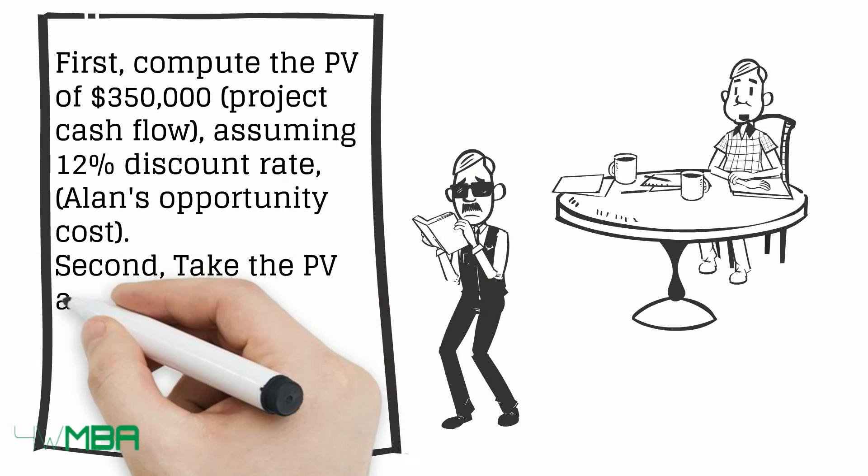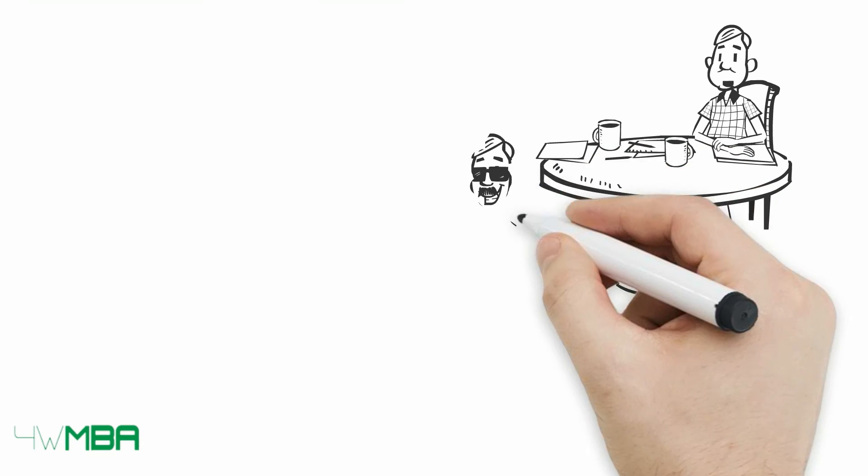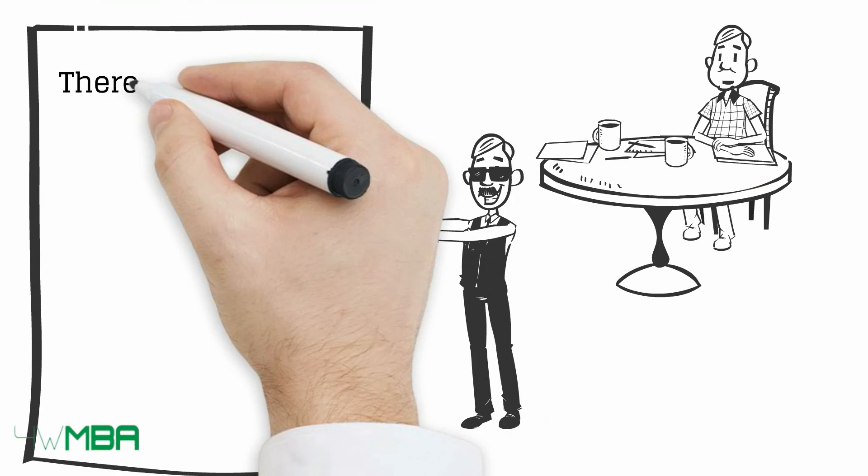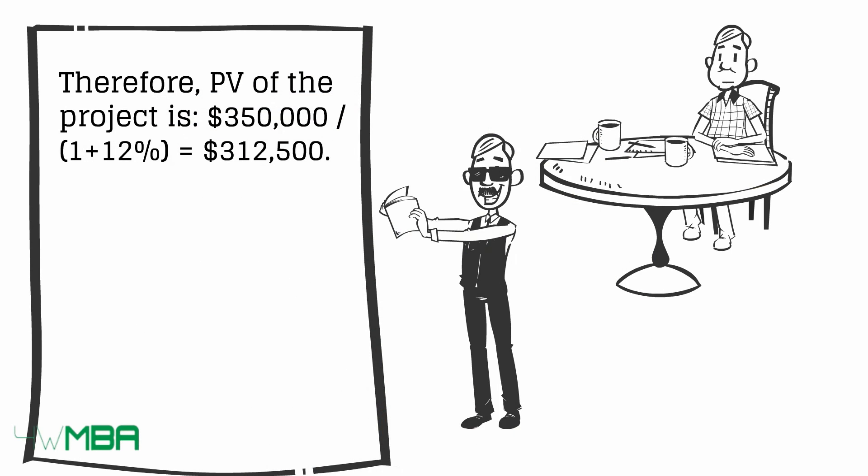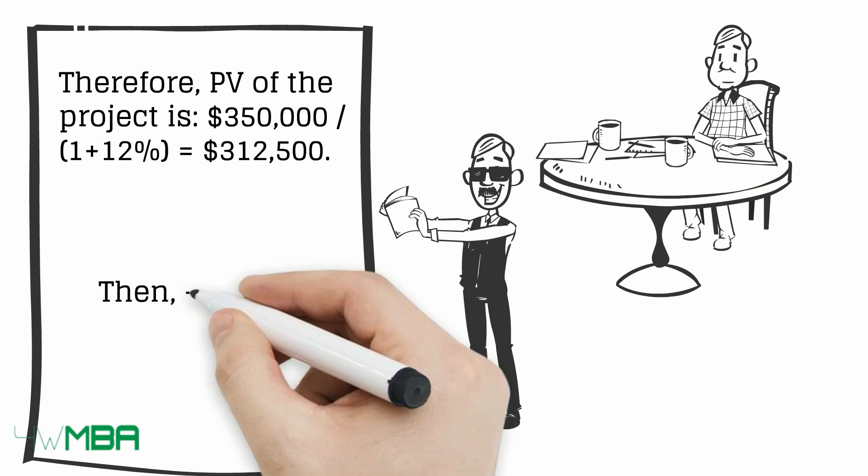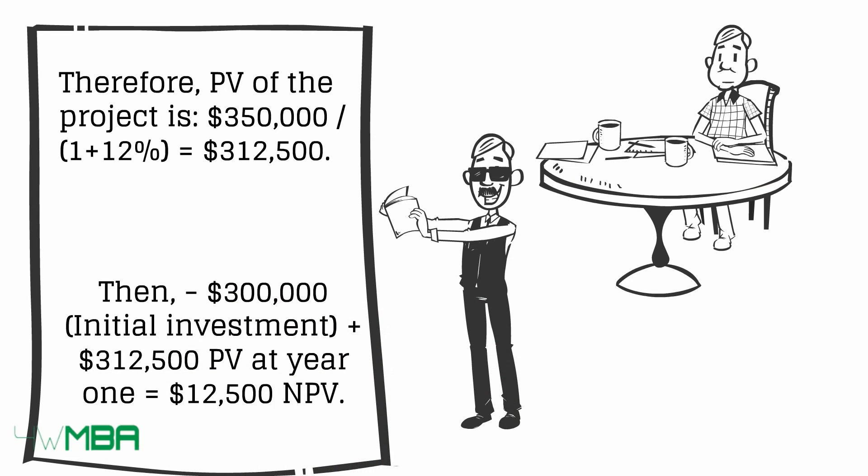Therefore, take the PV of three hundred and fifty thousand dollars, divide it by one plus twelve percent, which equals three hundred and twelve thousand five hundred dollars. Then subtract the initial investment of three hundred thousand dollars from the three hundred and twelve thousand five hundred dollars present value, which equals twelve thousand five hundred dollars NPV.